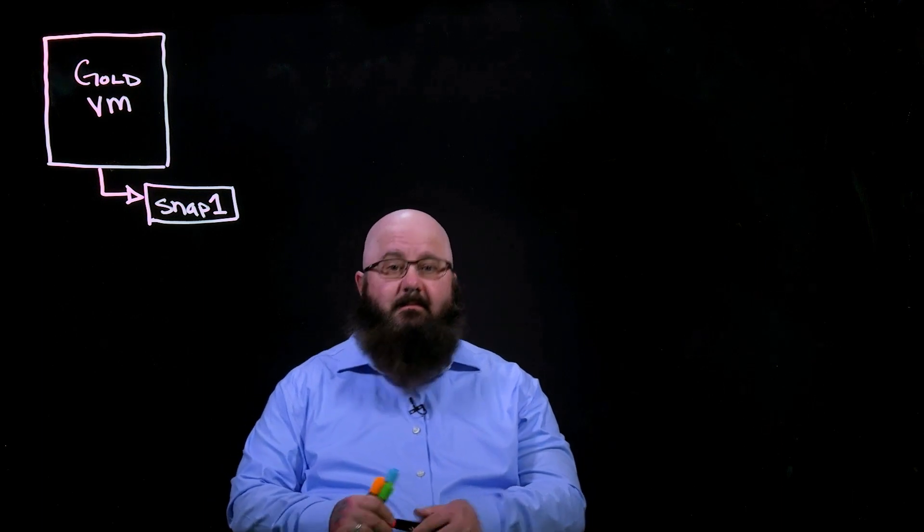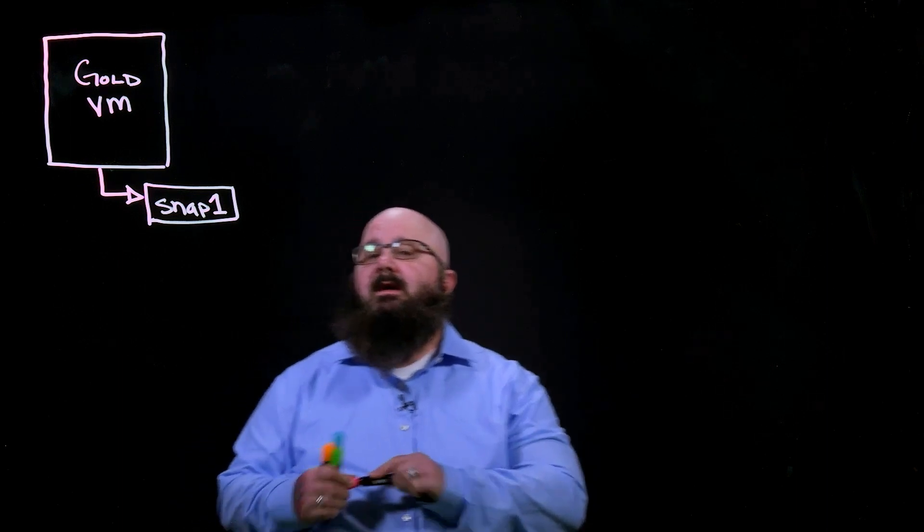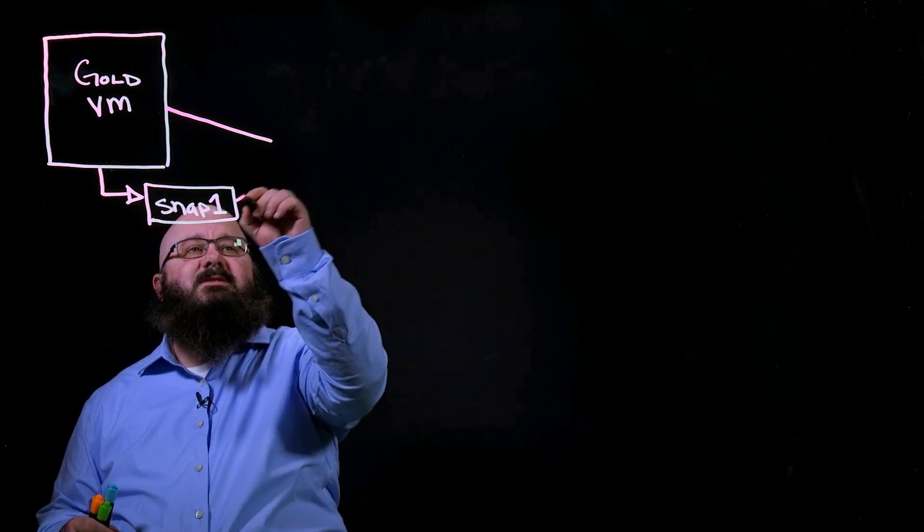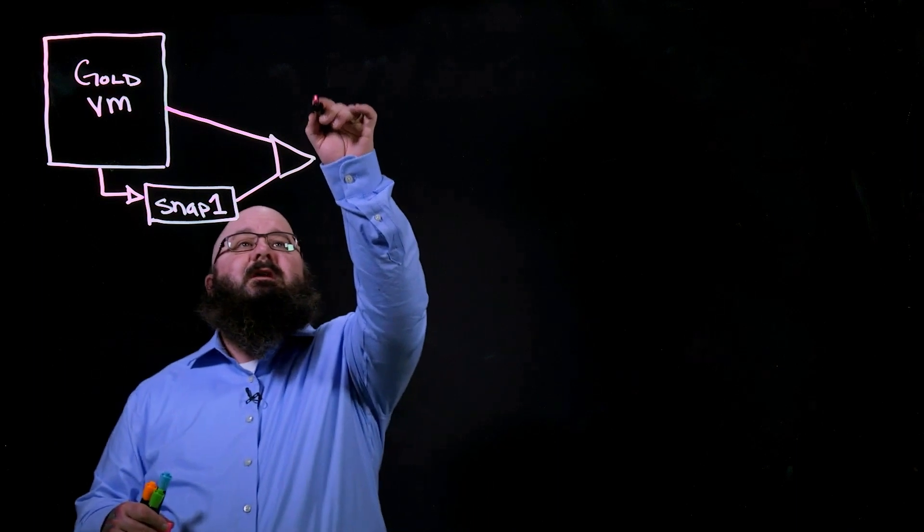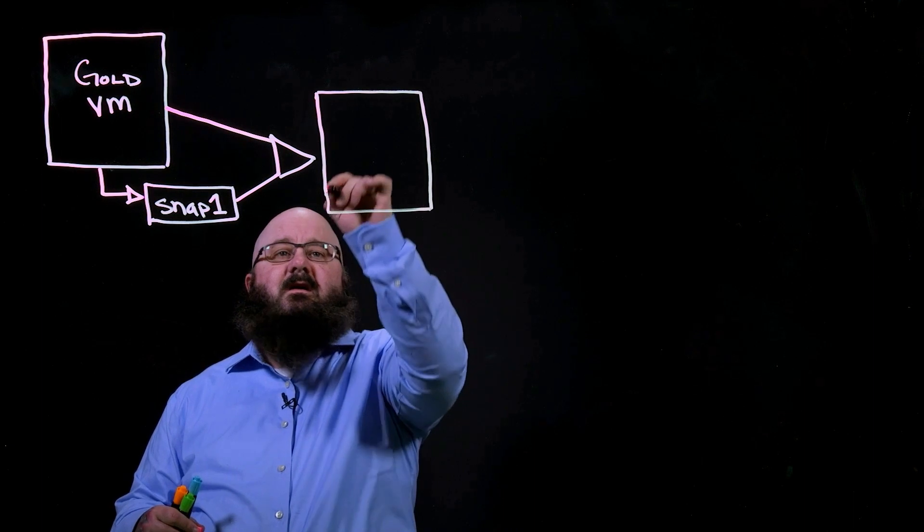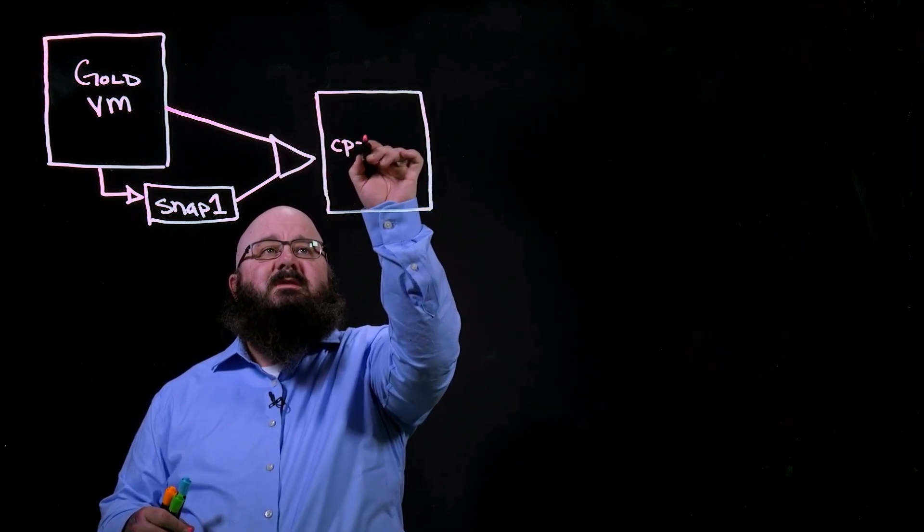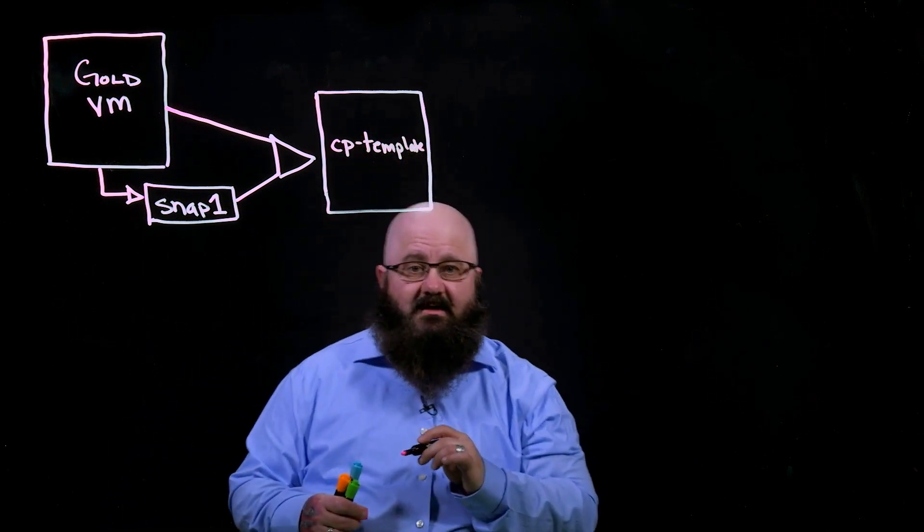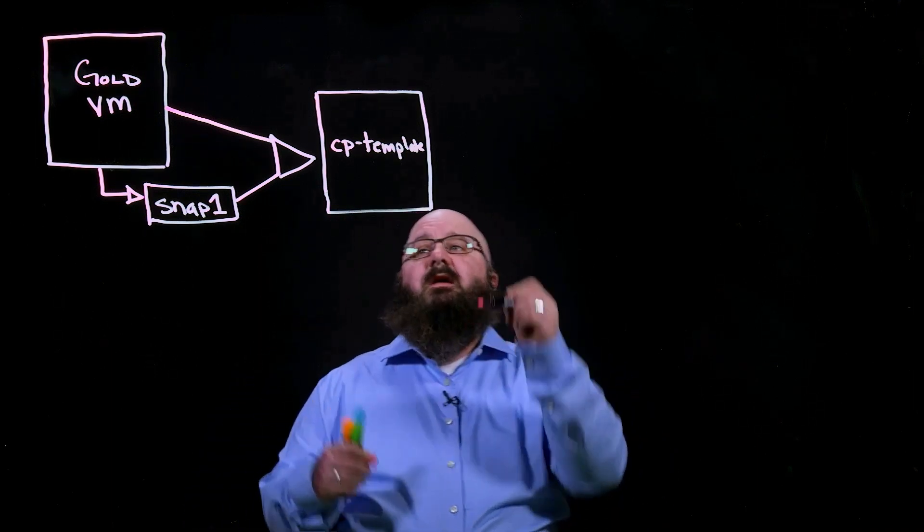One of the first things that gets created by the Instant Clone engine is the template. Because the template is actually built off of our snapshot, it'll be based and it will actually reside in the same cluster as our master image or gold image. So we'll start off. It will be named initially CPTemplate and then a bunch of digits afterwards as part of the image itself. So we'll create our template.